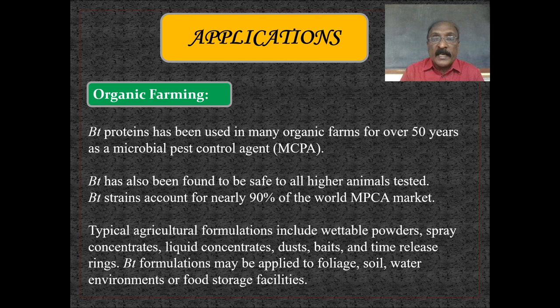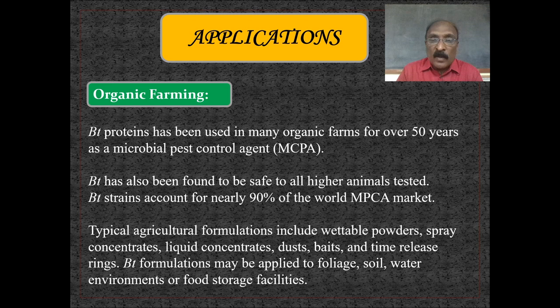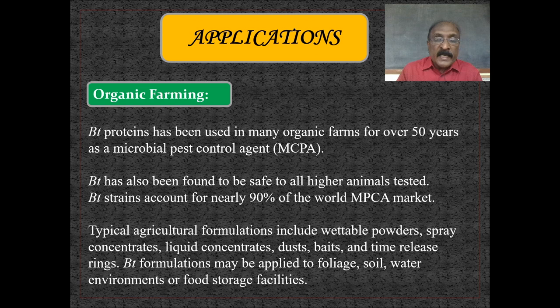Coming to the application part: Bt proteins have been used in many organic farms for over 50 years as a microbial pest control agent. Bt has been found to be safe to all higher animals tested. Bt strains account for nearly 90% of the world MPCA market. Typical agricultural formulations include wettable powders, spray concentrates, liquid concentrates, dust, bait, and time-release rings. Bt formulations may be applied to foliage, soil, water environments, or food storage facilities.